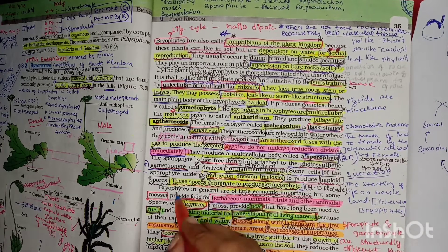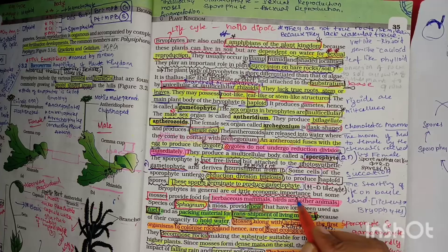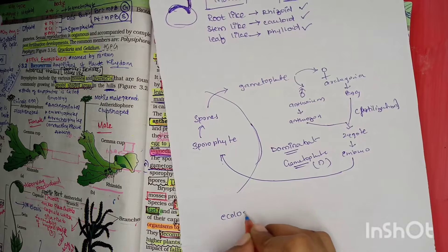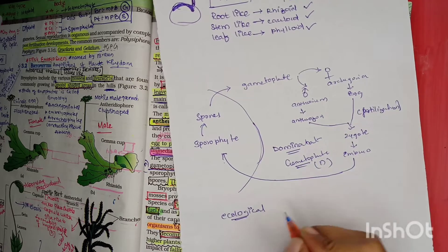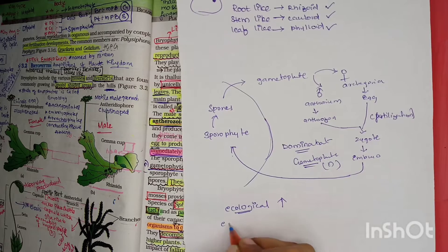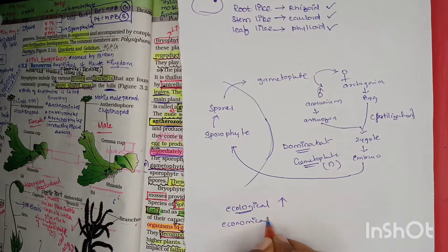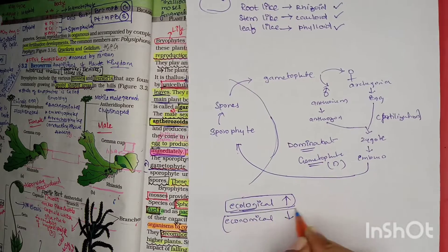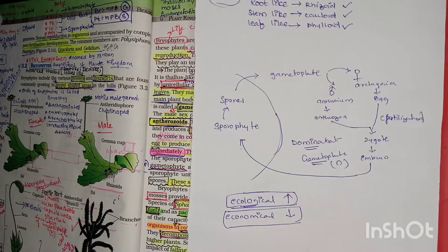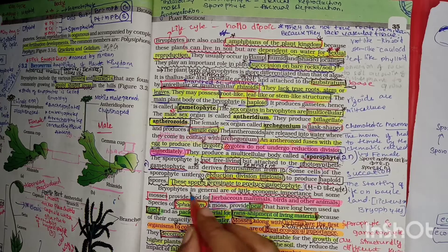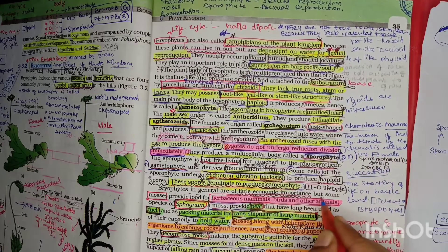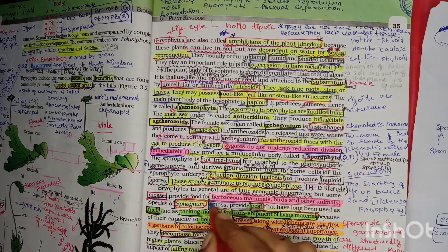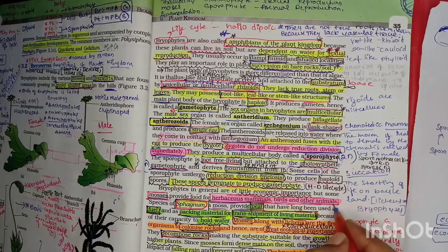Bryophytes in general have little economic importance but great ecological importance. Ecological importance is very high whereas economical importance is very low. Only a few mosses provide food for herbaceous mammals, birds, and other animals.